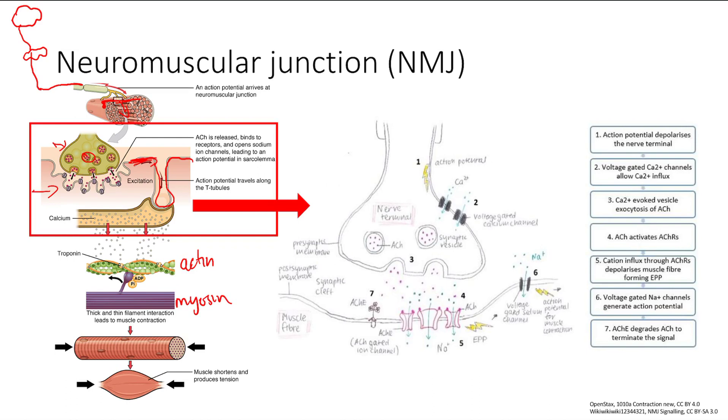Remember, the action potential comes down. We're at the nerve terminal, and this is the muscle fiber here. The action potential comes down and causes depolarization and a more positive potential inside this cell.